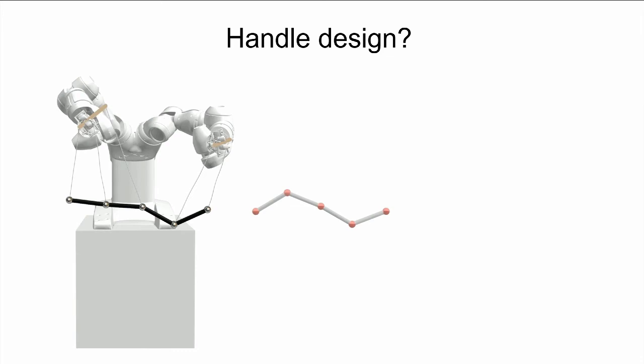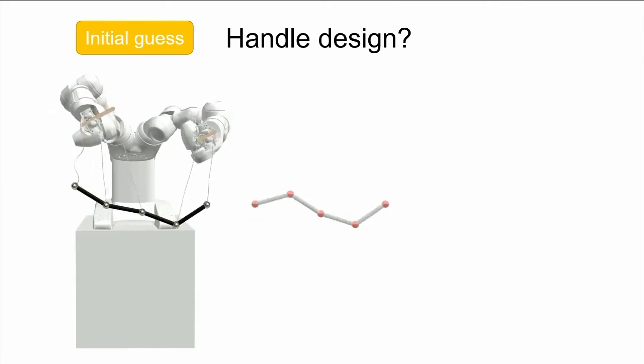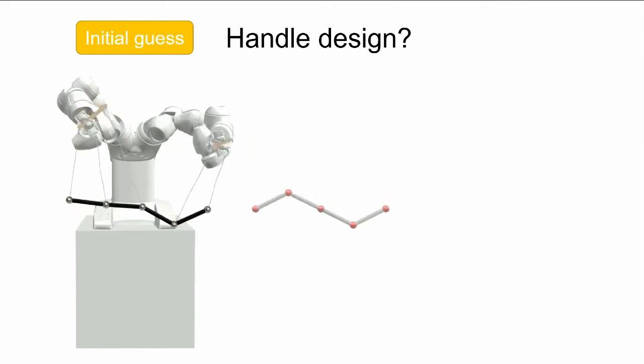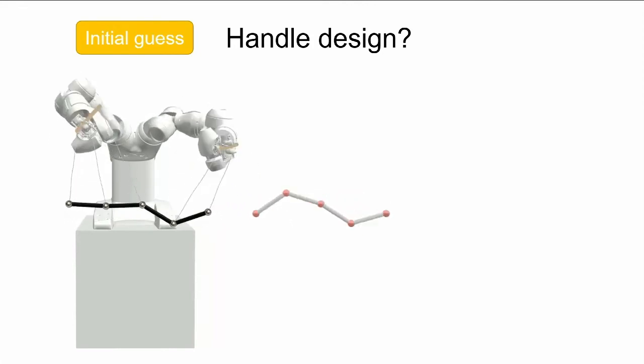So what we can do is we can start with an initial guess, run our optimization, then run the animation and see if we're happy with the result. However, you can see in this example that we are not matching the target trajectory really closely, and also the robot needs to perform really large movements.